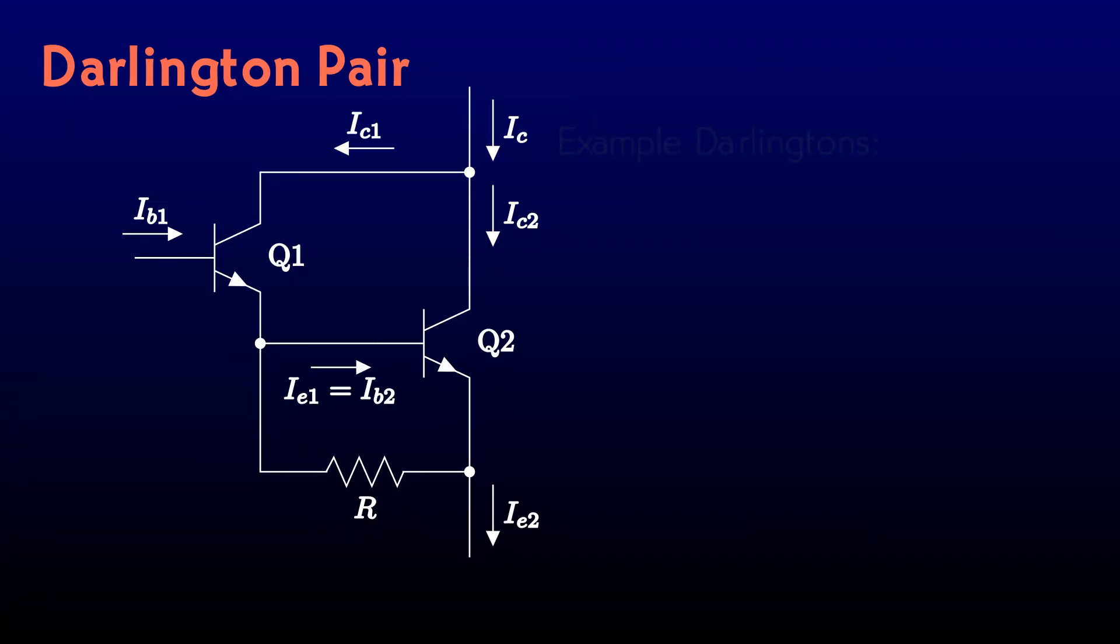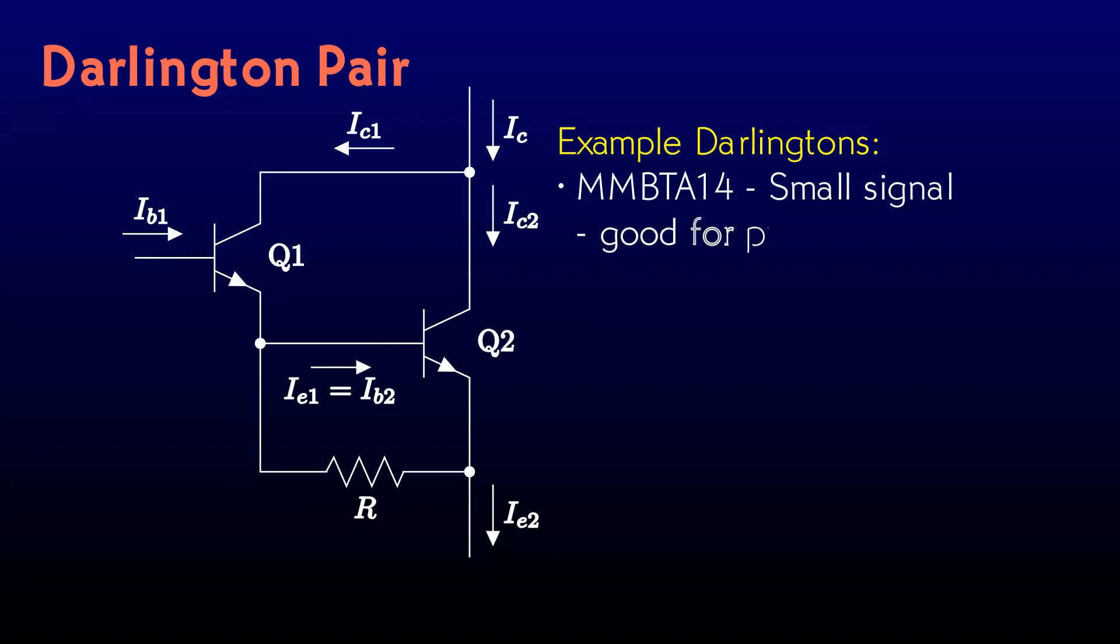Darlington pairs are useful enough that the manufacturers sell many, many different varieties of packaged pairs. One favorite of mine is the MMBTA14, a small signal one that the distributors stocked by hundreds of thousands. It's good for matching high impedance sources, and it costs only pennies in quantity, making it an ideal sort of part for a hacker to just keep around.